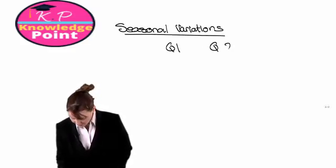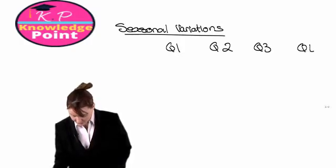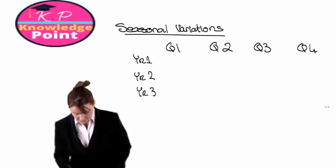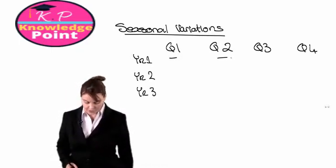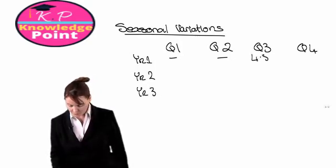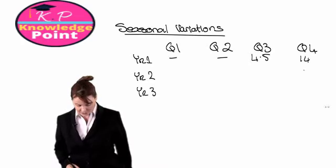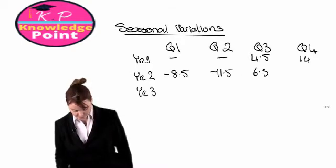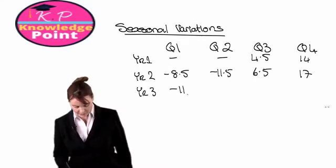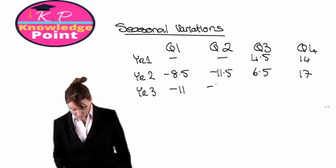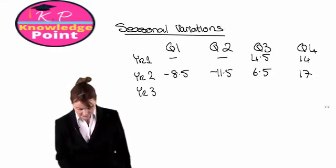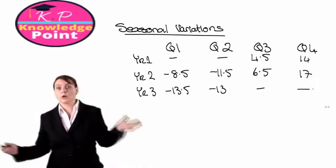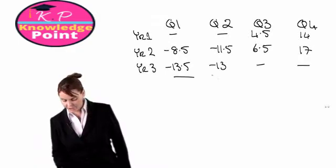We have our four quarters and we are going to add into our table the seasonal variations we have calculated for each of our three years. For year one, we don't have seasonal variations for the first two quarters; we got 4.5 and 14 for quarters three and four. In year two we add in the seasonal variations we have calculated. Finally in year three, we only have seasonal variations for Q1 and Q2, which were minus 13.5 and minus 13.